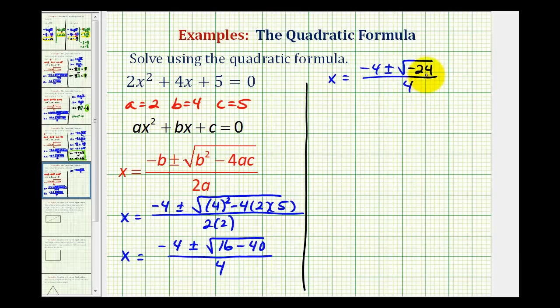And now we want to simplify the square root of negative 24, which we'll simplify to an imaginary number. So this equation is going to have two complex solutions.